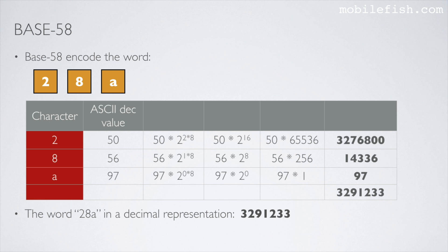Let's try another example. We want to base58 encode the word 28a. I write down the characters 2-8-a. These are the corresponding ASCII decimal values. The values 0, 1, and 2 again refer to the index positions. If you calculate this equation, you get this value, and this value, and this value. If you add these three values, you will get this value. The word 28a in decimal representation is this value.